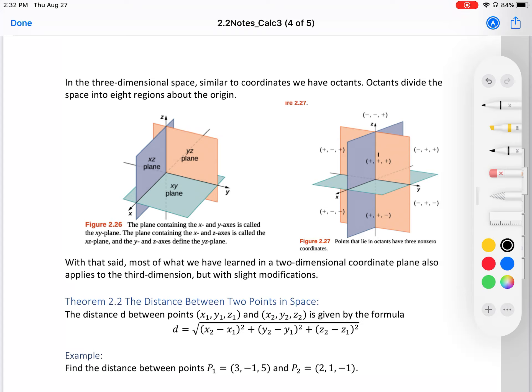In three dimensional space, similar to quadrants, we have octants. Octants divide the space into eight regions about the origin. I have two images from your textbook. I like this one more because you can see where everything falls and when each octant has each coordinate as positive and negative.